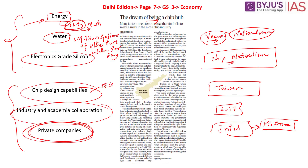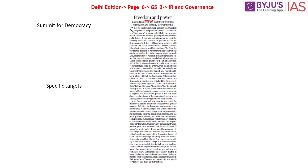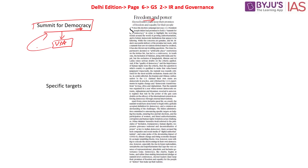The next article is titled 'Freedom and Power,' which discusses the Summit for Democracy — a virtual summit initiated by the United States of America. The US feared that many countries were sliding back into authoritarian regimes. To bolster democratic institutions, they invited as many as 110 countries, aiming to promote democracy and oppose authoritarianism.